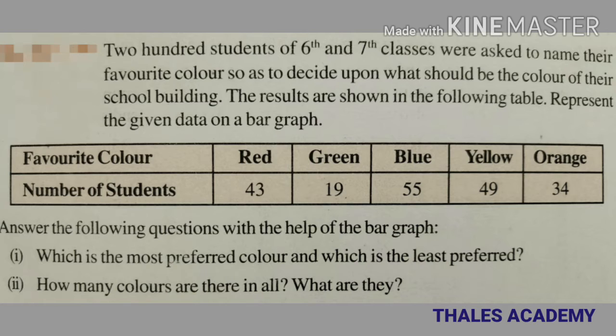Here is the table. Favorite color red: 43 students. Green: liked by 19 students. Blue: liked by 15 students. Yellow: liked by 49 students. Orange: liked by 34 students. The questions are: which is the most preferred color and which is the least preferred? Question two: how many colors are there in all and what are they?